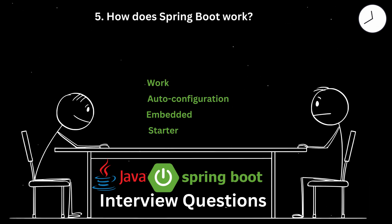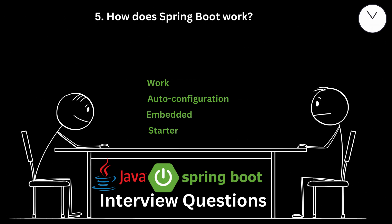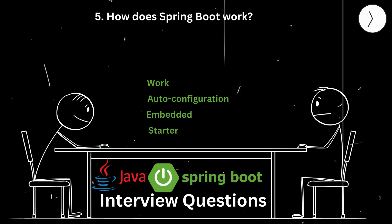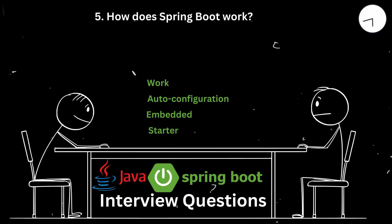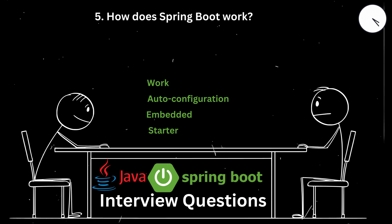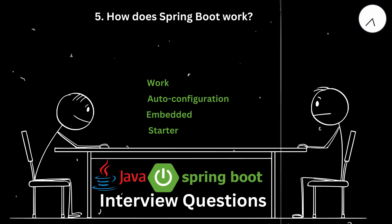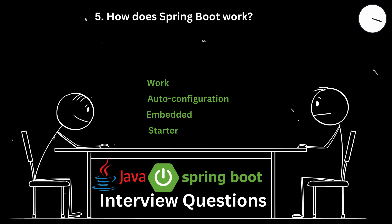How does a Spring Boot application work? Spring Boot works by auto-configuration — it scans the classpath to determine which libraries are present and automatically configures the appropriate Spring components. In a content management system project, including Spring Boot Starter Data JPA automatically configured Hibernate and JPA repositories based on the project's dependencies.